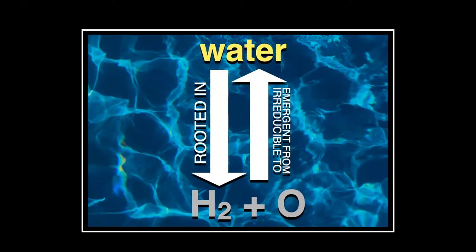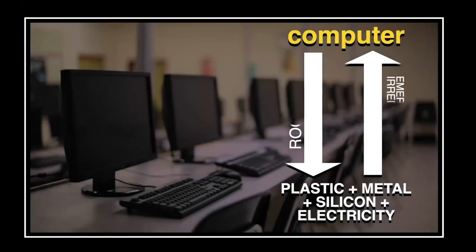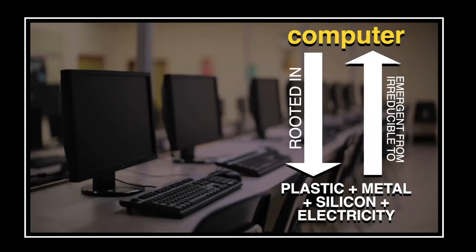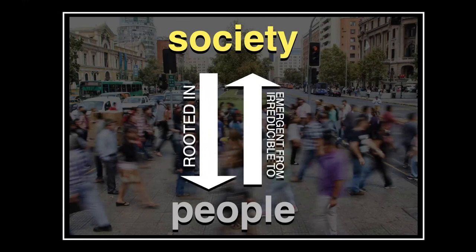Water is rooted in H2O, but it's emergent from and irreducible to hydrogen and oxygen. You can't say 'I want to learn more about water by studying only hydrogen and oxygen.' Another example: a computer is made of plastic, metal, silicon, and electricity, but it's not just a bunch of those materials. Something new has emerged and cannot be reduced to merely its components. The more relevant example is society — obviously rooted in people, but you can't reduce society to the individual persons that belong to it. When you have a society, something has emerged and is irreducible to the individual members.